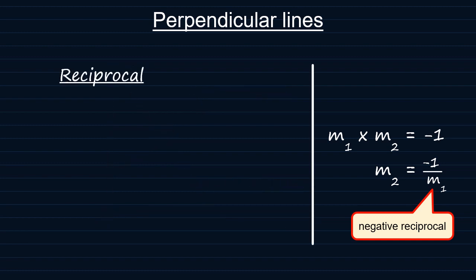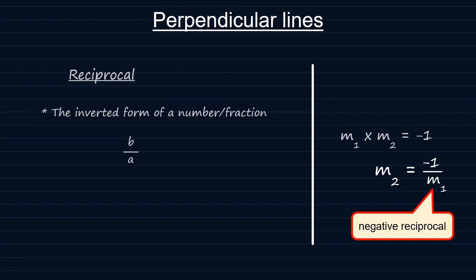Now, I would like to think that you already know what the term reciprocal means. Reciprocal is simply the inverted form of a number. Like, if you have A over B, then the reciprocal is B over A.